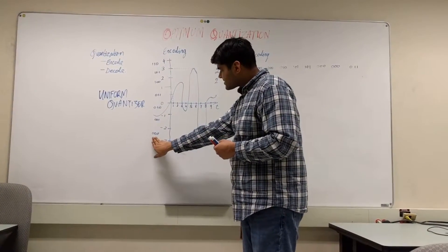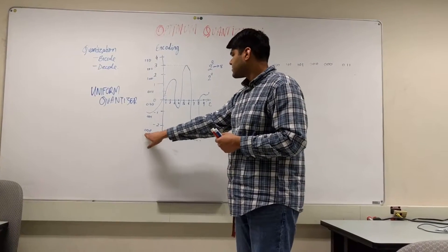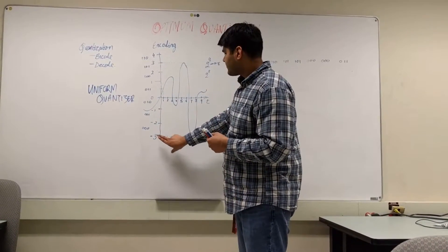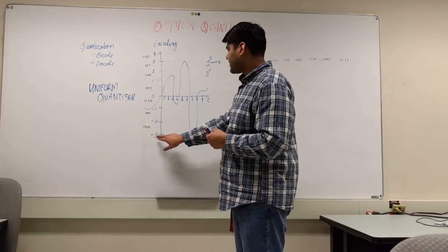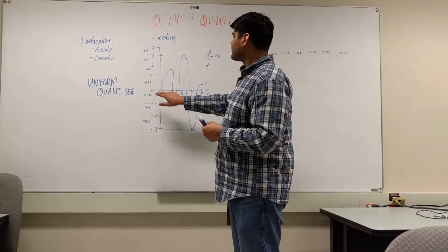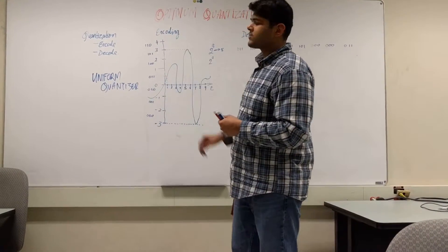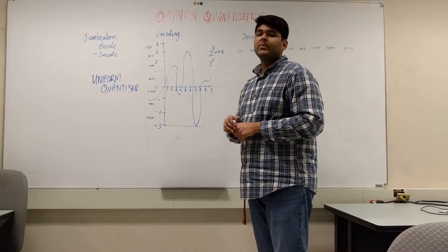So, we have given these specific values using 3 bits. 0, 0, 0 for the value of the signal between minus 3 to minus 2. Between minus 2 to minus 1, 0, 0, 1. Minus 1 to 0, it would be 0, 1, 0, and so on and so forth, as you can see in this graph.